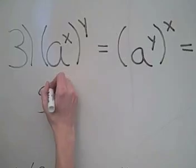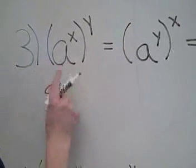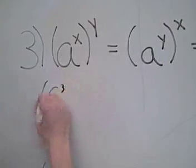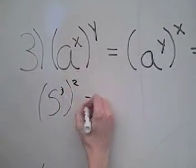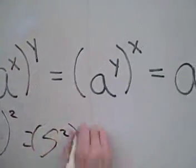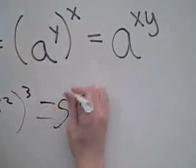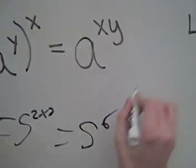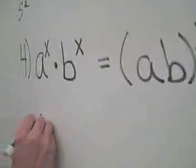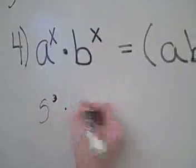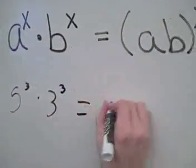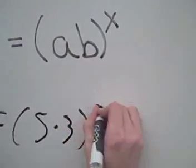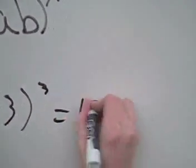So 5 squared, then cubed, would be the same thing as 5 squared cubed, which would also equal 5 to the 2 times 3, which equals 5 to the 6th. The fourth rule is a to the x times b to the x equals ab to the x. So using our previous example, 5 cubed times 3 cubed would be the same thing as 5 times 3 cubed, which would equal 15 cubed.